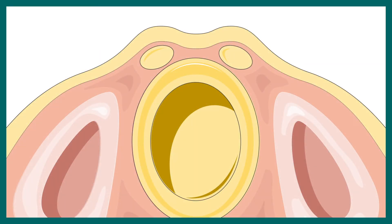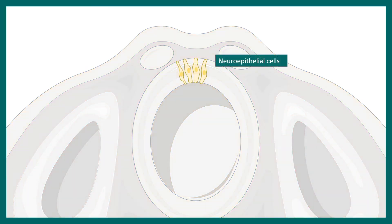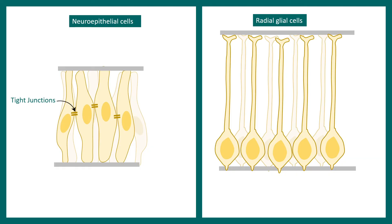Now let's get back to the cellular details. This is the neural tube in which the folding and closure have happened. If we zoom into the neural tube, we would see cell types known as neuroepithelial cells. These neuroepithelial cells are actually stem cells with the capability of self-renewal. They divide and give rise to daughter cells which are exactly identical. These neuroepithelial cells give rise to neurons, but in a sequential fashion.